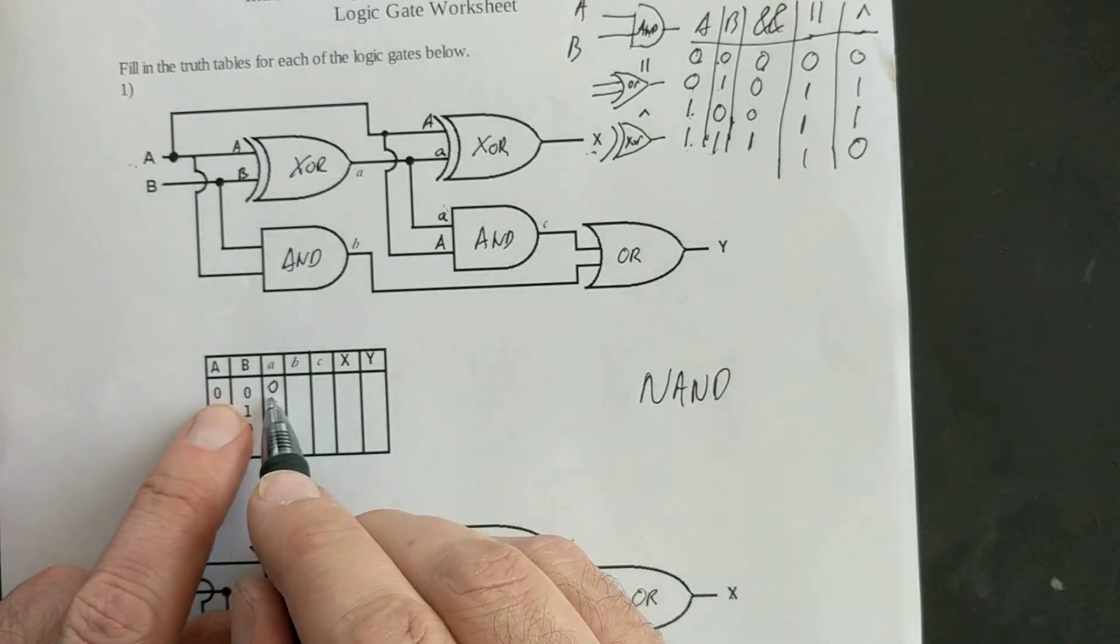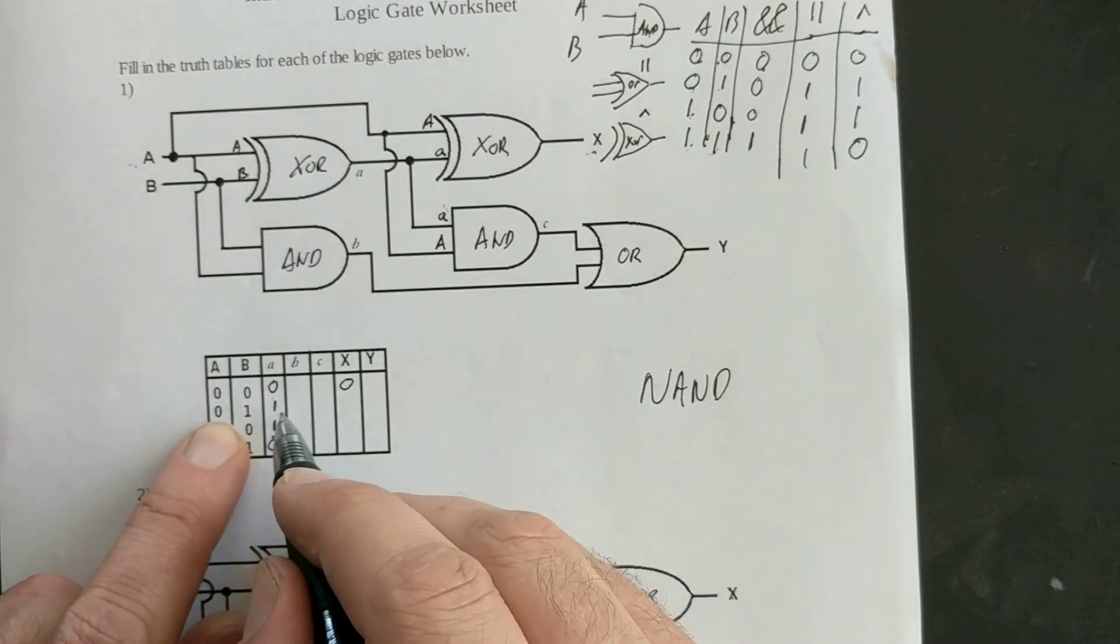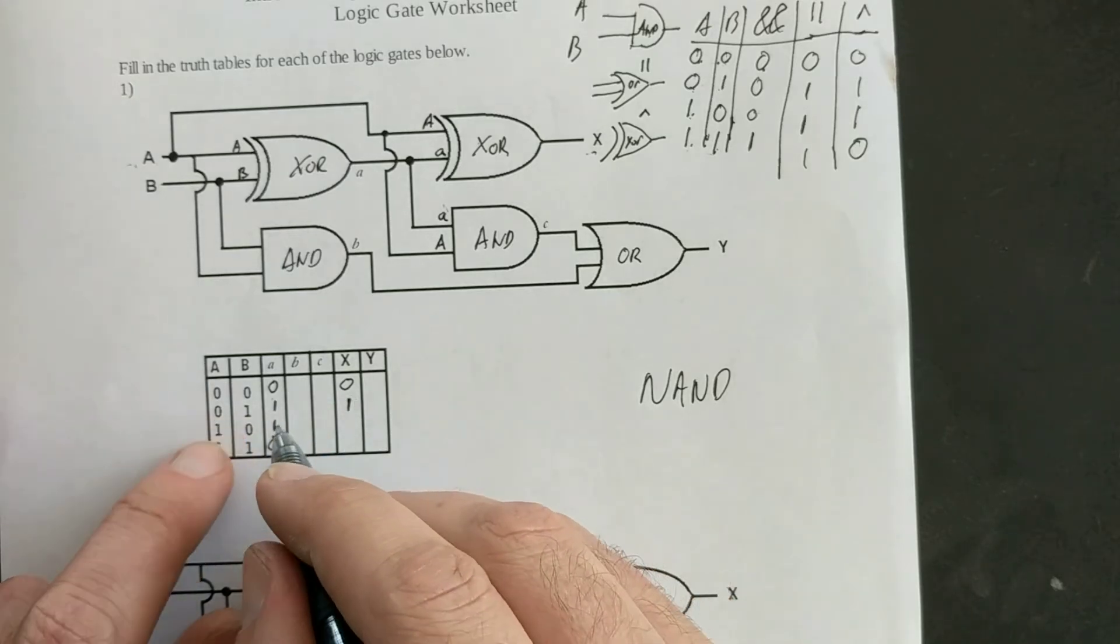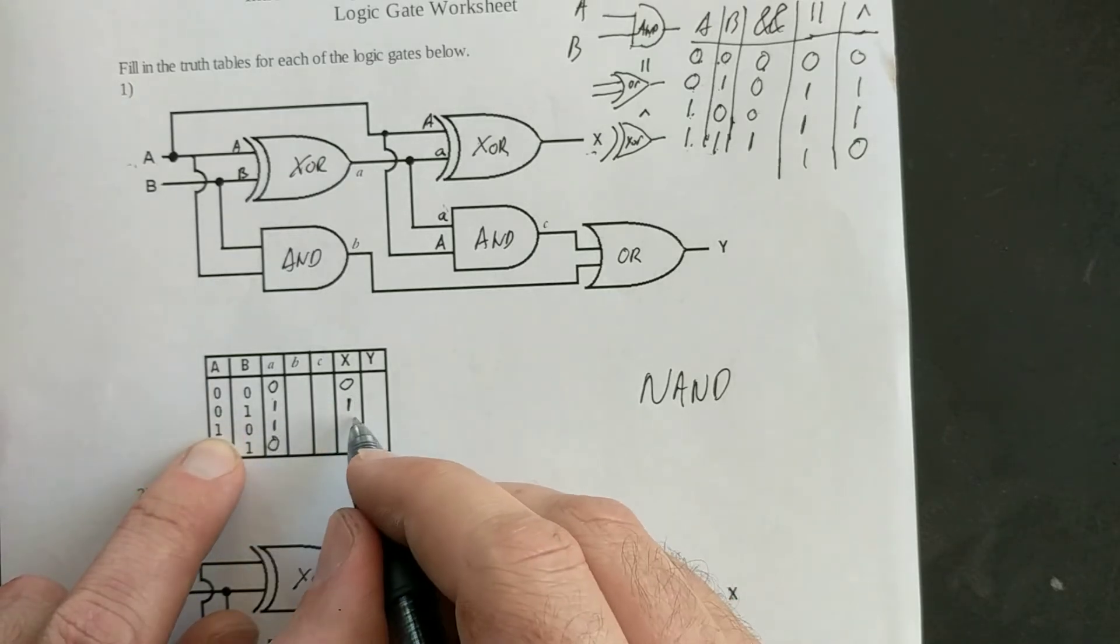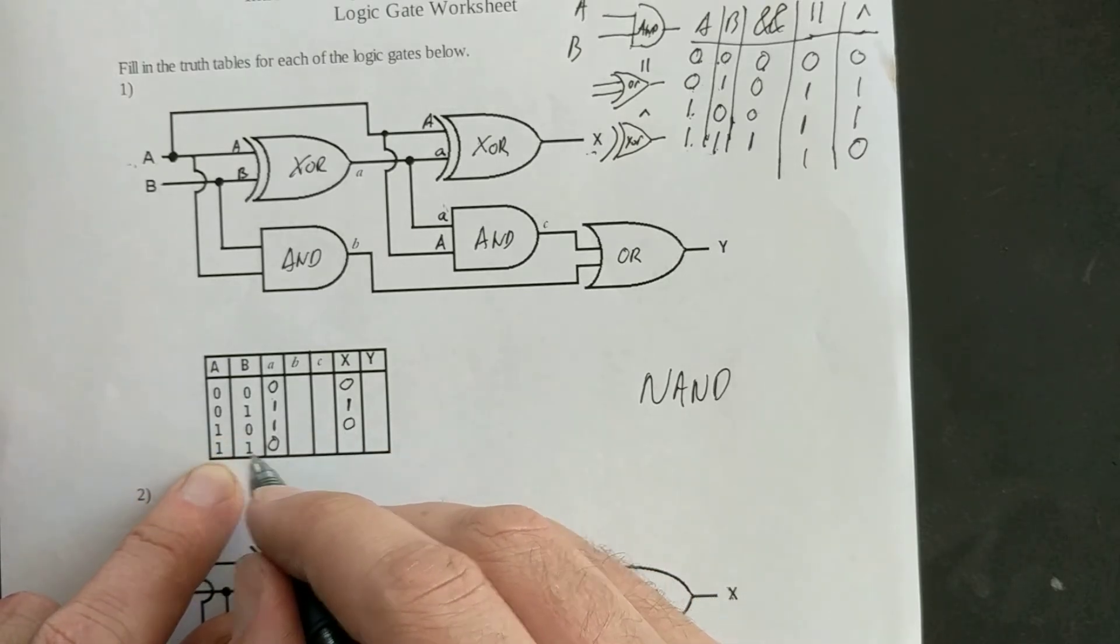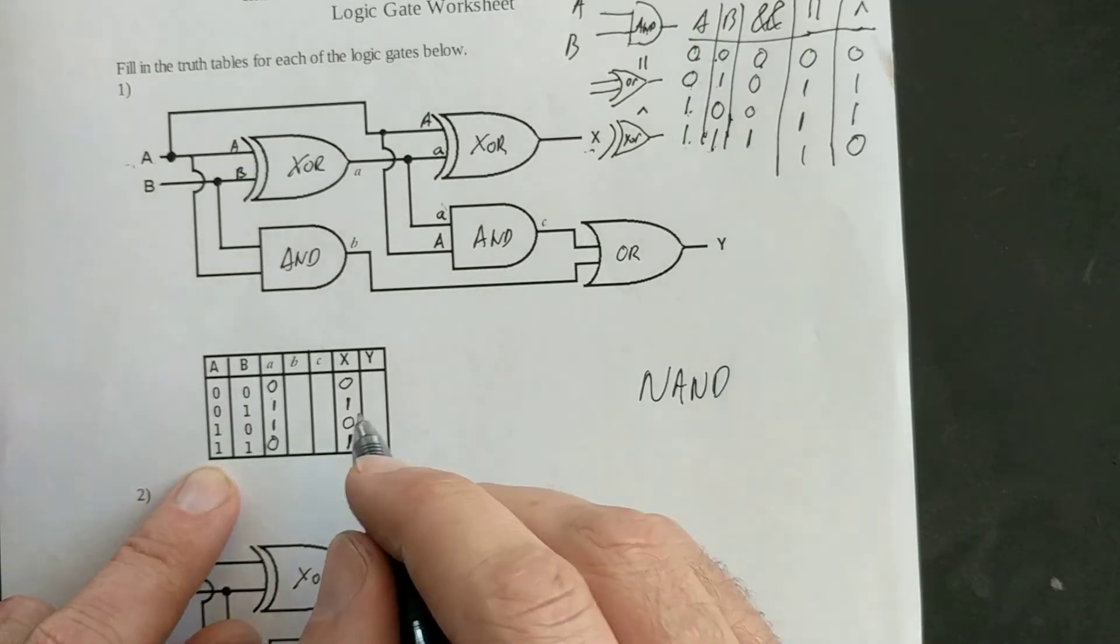So this XOR gate is an exclusive word between capital A and lowercase a. Those are these two columns. My result is X. So, capital A and lowercase a are both OFF, so X is OFF. Capital A is OFF, lowercase a is ON, XOR gives me ON. They're both ON and XOR says that's OFF. Capital A is ON, lowercase a is OFF, so X is ON. There's one of my results.